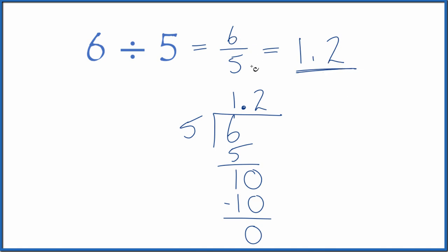Do note that 6 fifths, if we look at the fraction 6 fifths here, that is an improper fraction. So that would be 1 and 1 fifth as a mixed number here. And all of these are equivalent. 1 and 1 fifth, that's the same as 6 fifths, and as a decimal, 1.2.